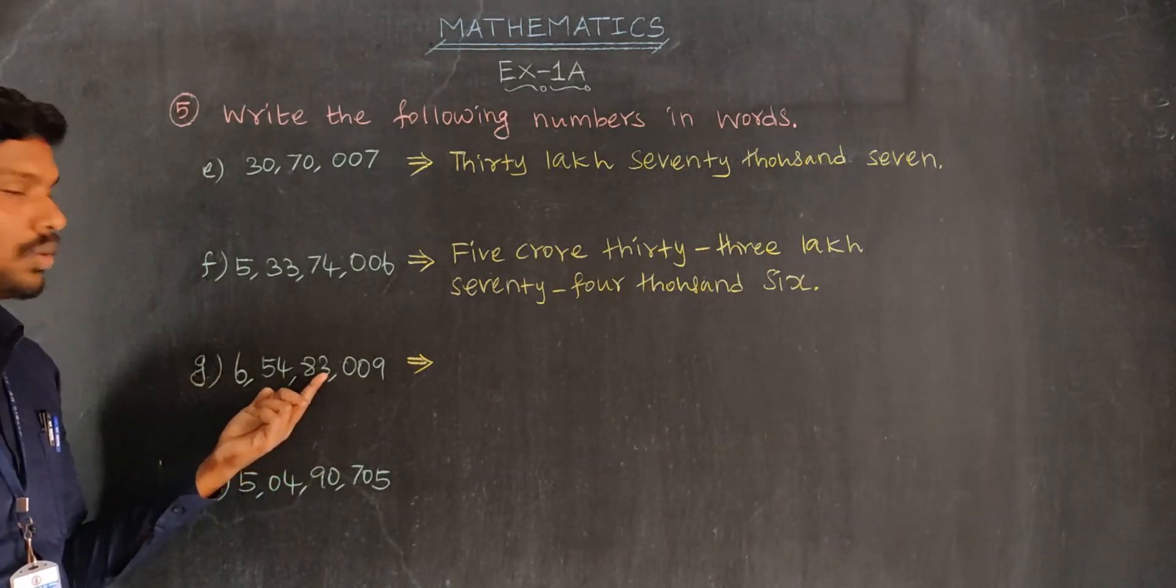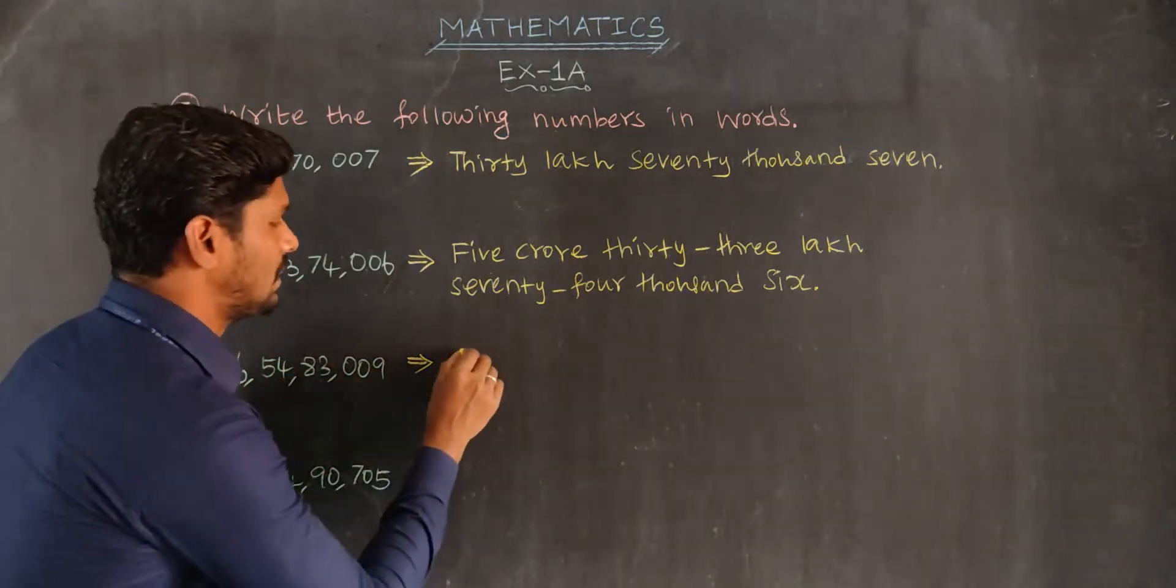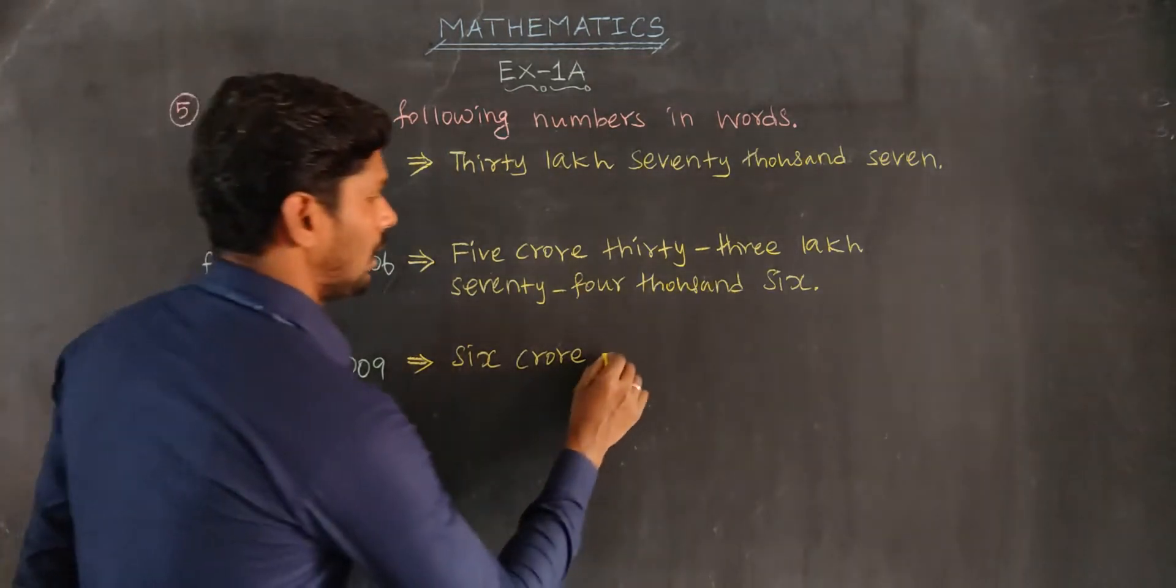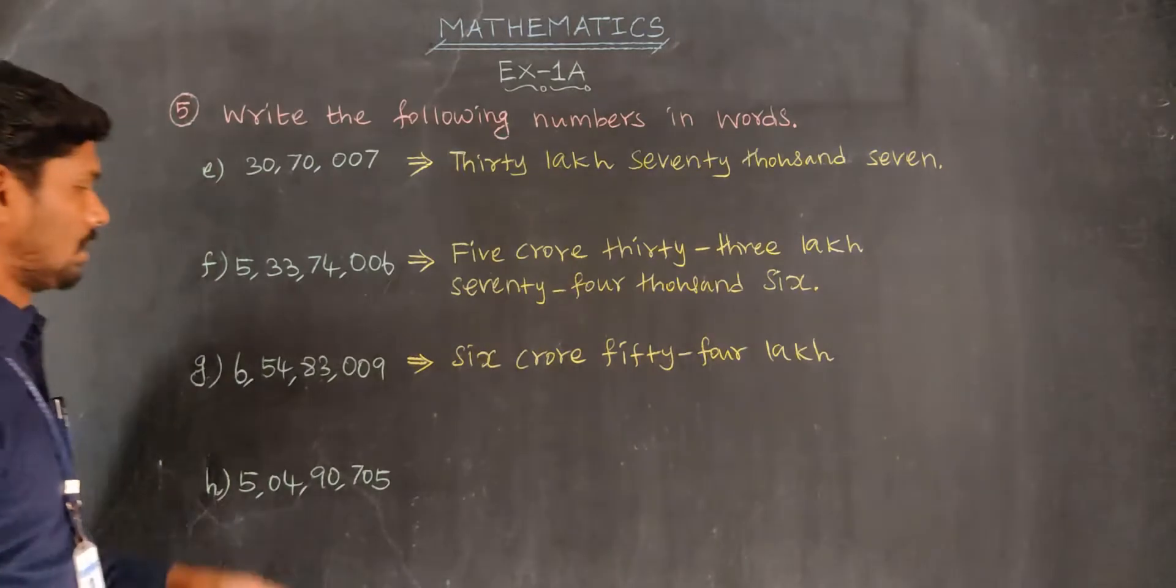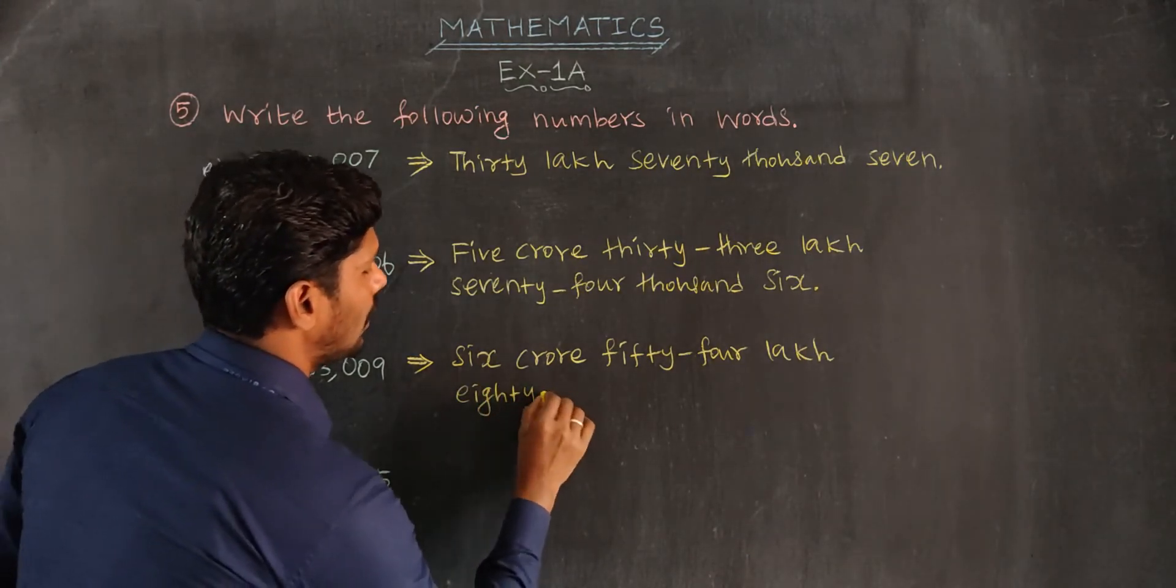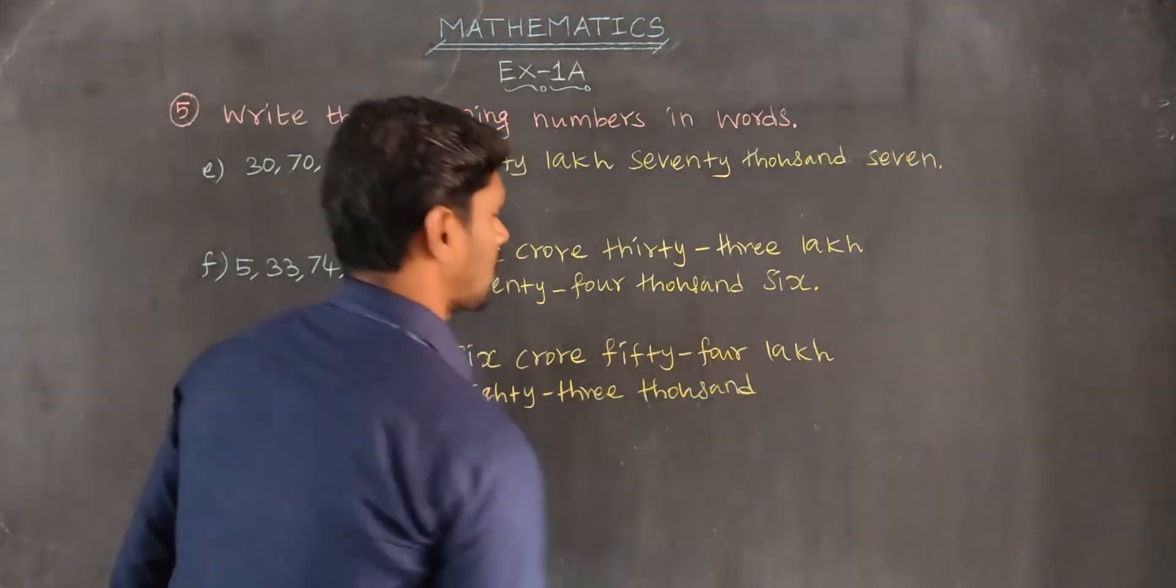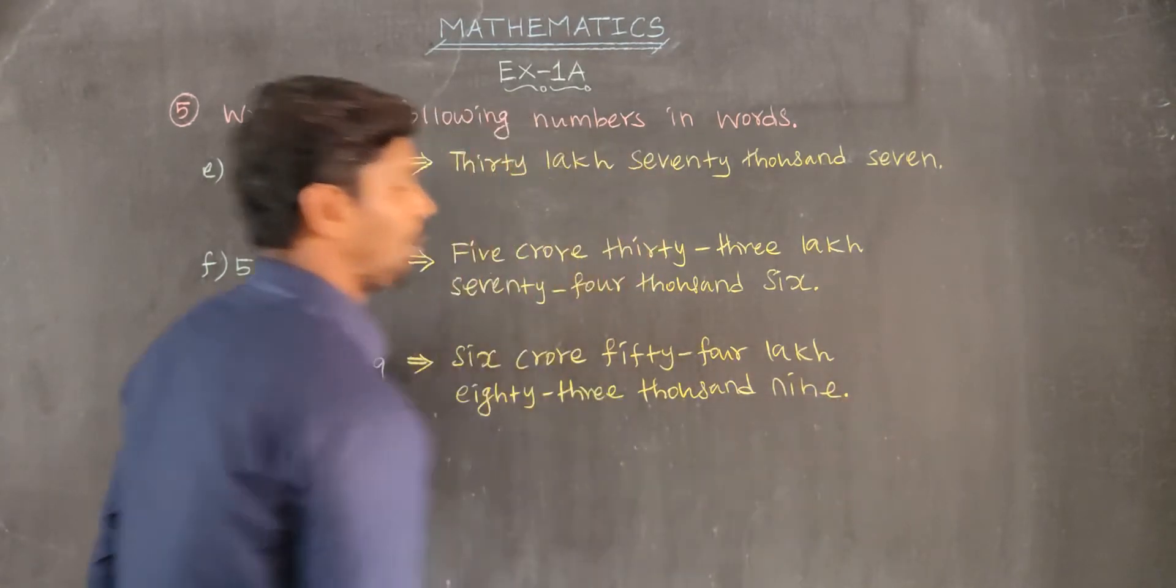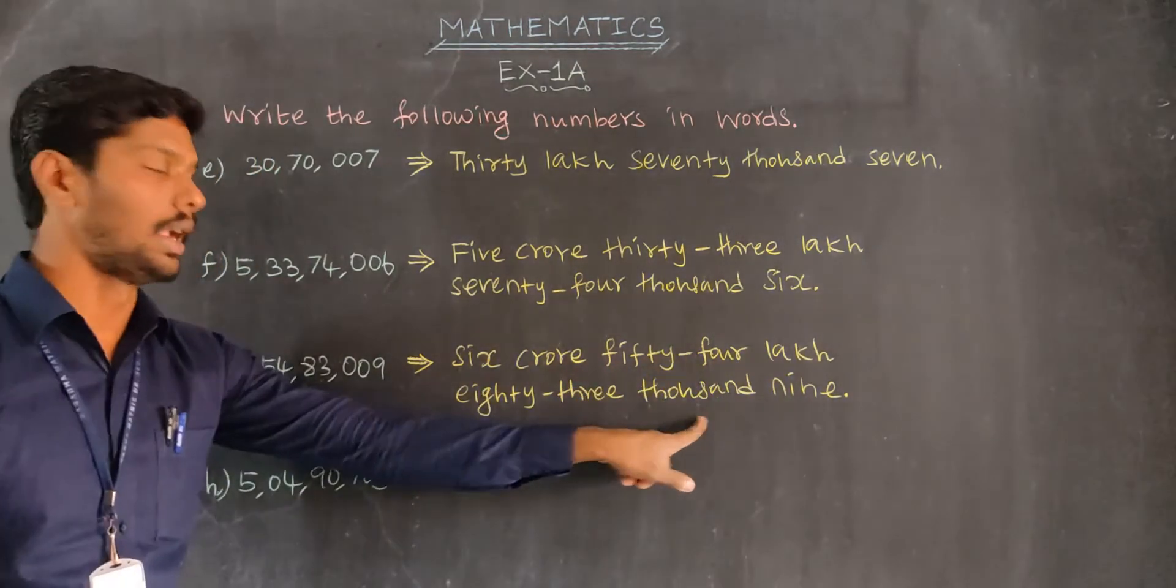Ones, tens, hundred, thousand, ten thousand, lakh, ten lakh, crore. Six crore, fifty-four lakh, eighty-three thousand. Hundreds value zero, tens value nine. Six crore fifty-four lakh eighty-three thousand nine.